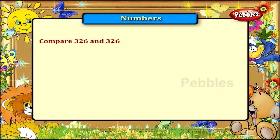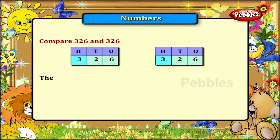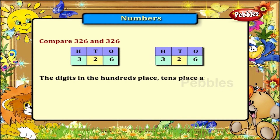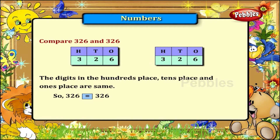Compare 326 and 326. The digits in the hundreds place, in the tens place, and in the ones place are all the same. So 326 is equal to 326.